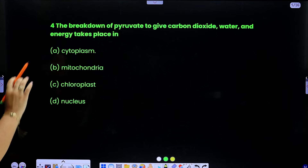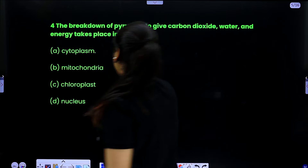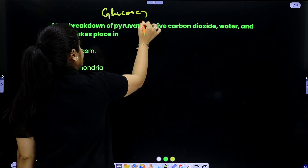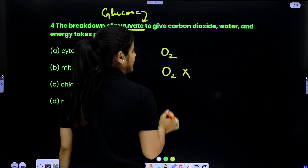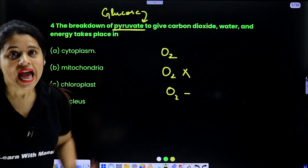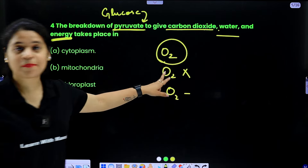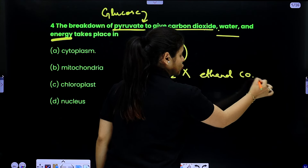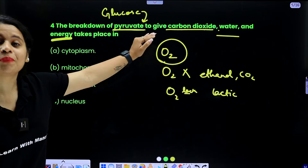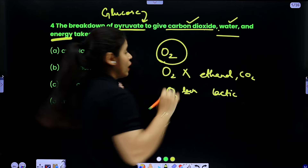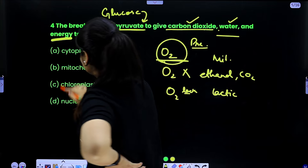The fourth question is: the breakdown of pyruvate to give carbon dioxide, water and energy takes place in? When glucose breaks down, we get pyruvate. There are three conditions: presence of oxygen, lack of oxygen, and absence of oxygen. In the presence of oxygen, we get carbon dioxide, water, and energy. Without oxygen, the products are ethanol and CO2, or lactic acid, and in every case there is energy. So only in the presence of oxygen do we get carbon dioxide, water and more energy — and this takes place in the mitochondria.